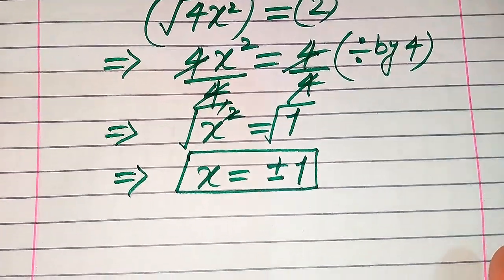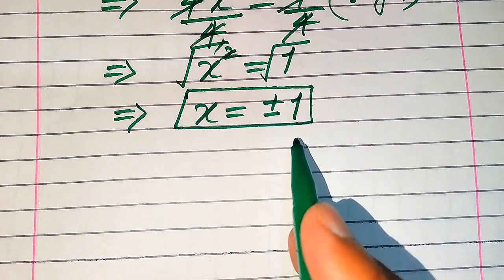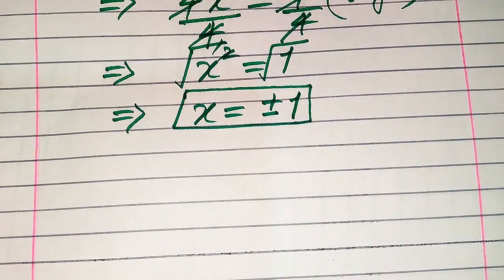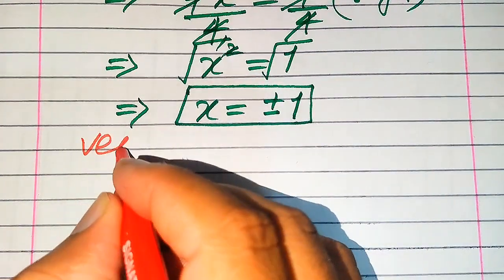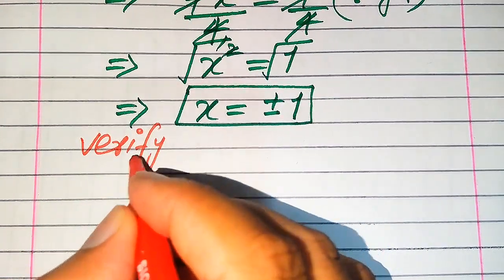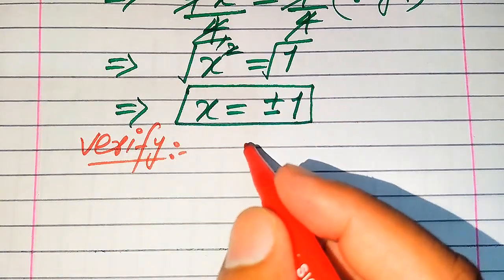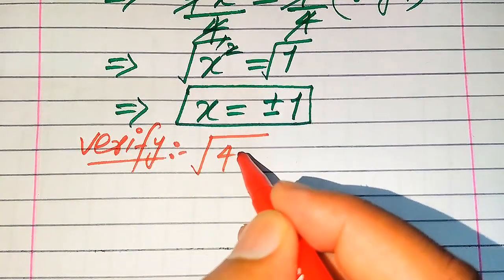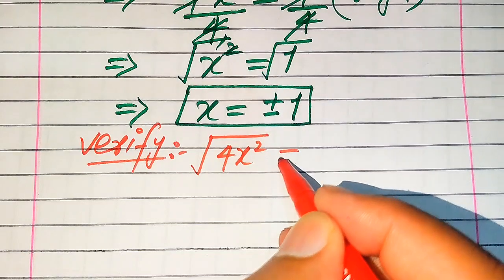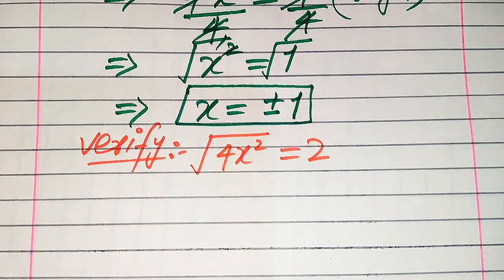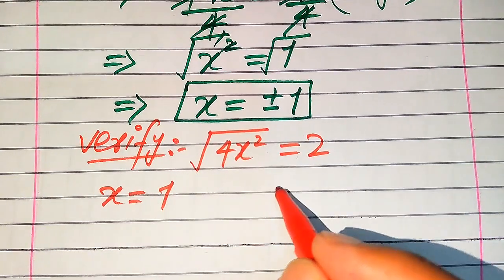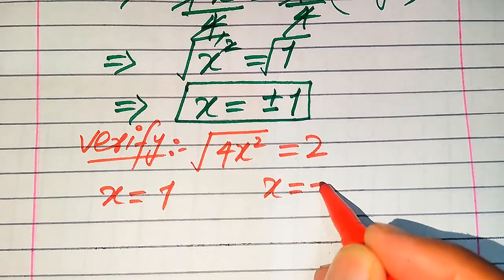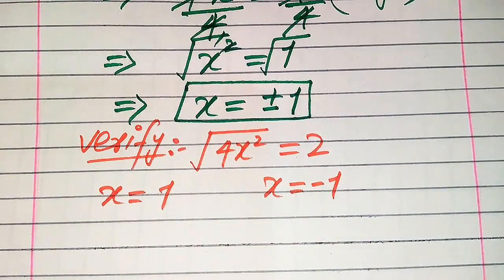In the first method we get two roots of the given equation. In the next step we need to verify which of the roots are solutions and which of the roots are extraneous roots. For verification we copy down the given equation: the square root of 4 times x squared equals 2. On this side we will verify the positive root and on this side we will verify the negative root.